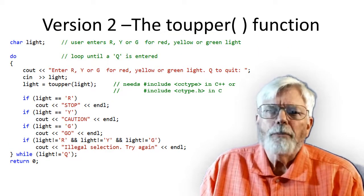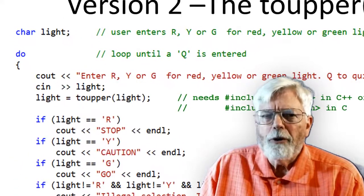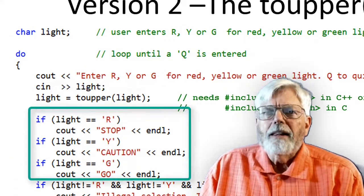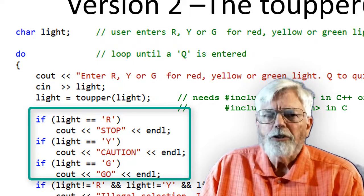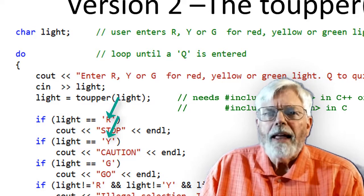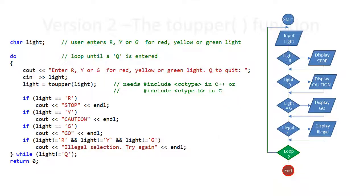The program can be simplified by converting the input variable to an uppercase character. The if statements now only need to test for uppercase characters big R, big Y, and big G. Here is a flow chart showing the execution of the program. When the logical expression for each if statement evaluates to true, the cout statement executes and control flows down to the next statement. If the expression evaluates to false, cout is skipped and control still flows down to the next statement.